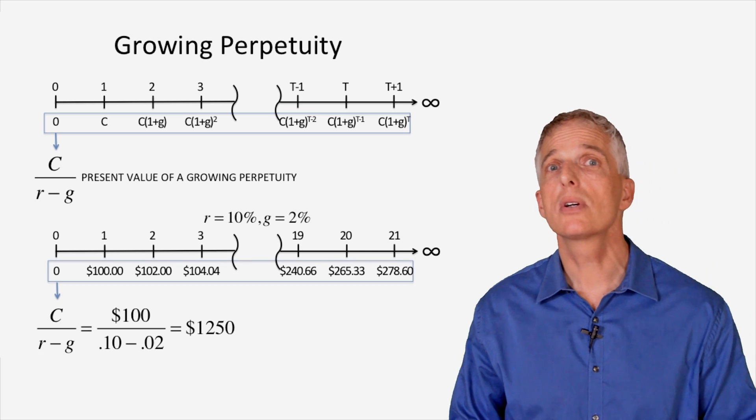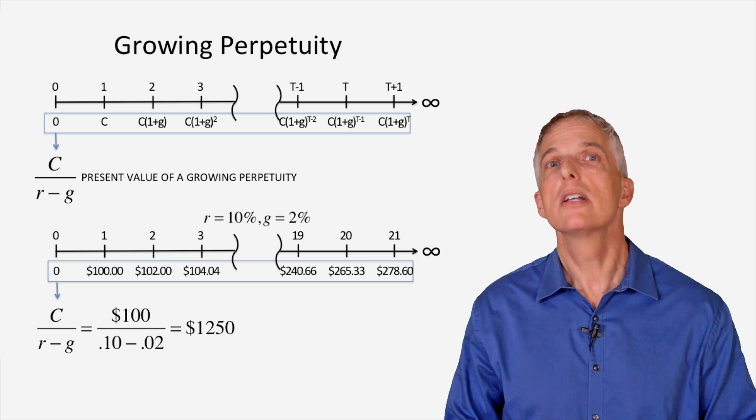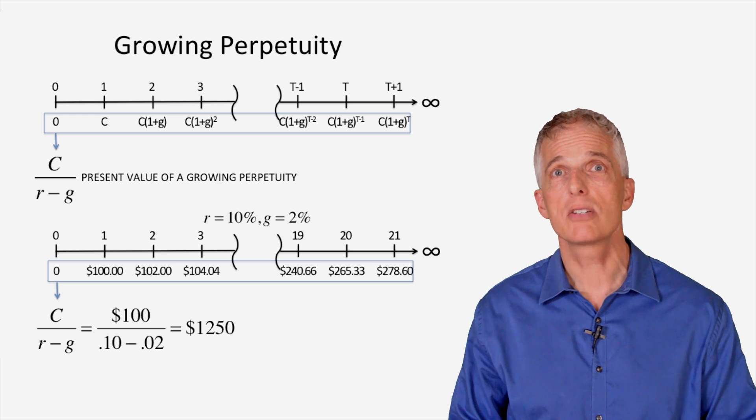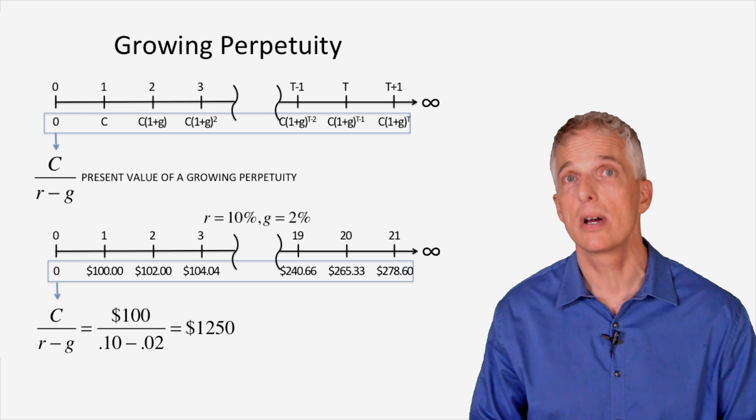The present value of the growing perpetuity would be the first cash payment of $100 divided by the prevailing interest rate of 10%, less the growth in the cash payment of 2%, which yields an answer of $1,250.